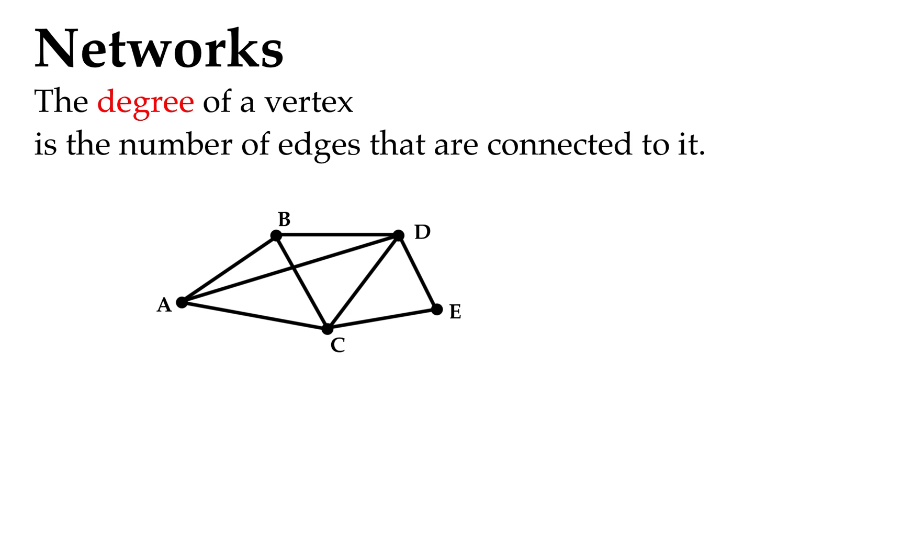So we have a diagram here ABCDE and the degree of A, and that's how we write it Deg A, the degree of the vertex A is the number of edges that are connected to it. And we can see that A has one, two, three edges connected to it, so we will indicate that the degree for A is three.